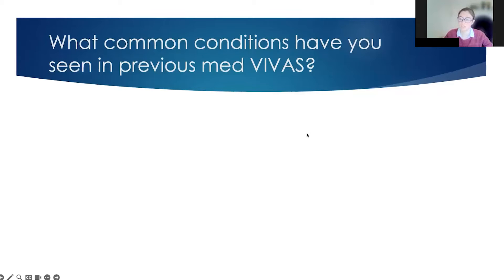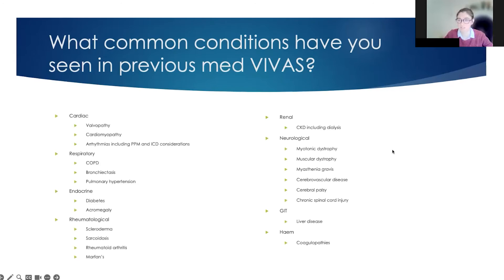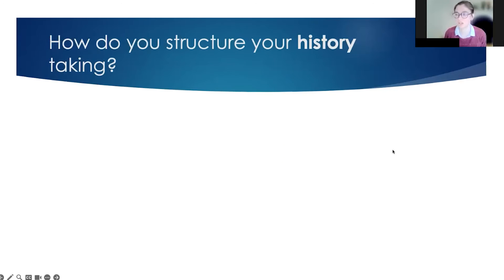What common conditions have people heard being brought up in previous med vivas? Rheumatoid, sarcoid, diabetes — yes. There are kind of multi-system things, or cardiac and respiratory focused conditions. This is just a little list of things I've noticed tend to come up. So I'm now going to ask: how do you structure your history taking when asked to take a history of a patient with a multi-system disease?